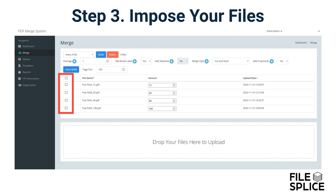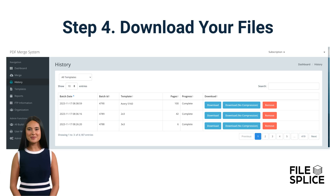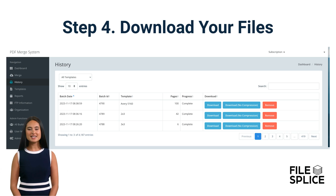Once you are ready to impose your files, select all or just the files you want imposed and click the Build button. Once you click the Build button, head to the History section. Here you will see the builds being processed. When a build is done, the download buttons will appear.